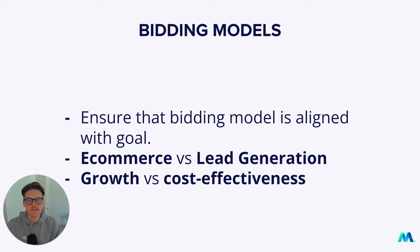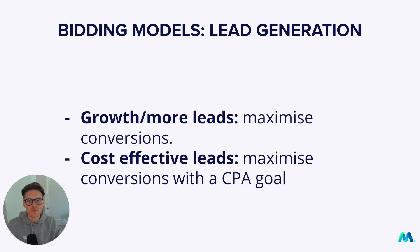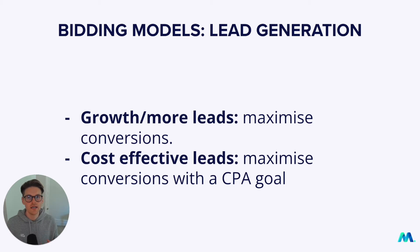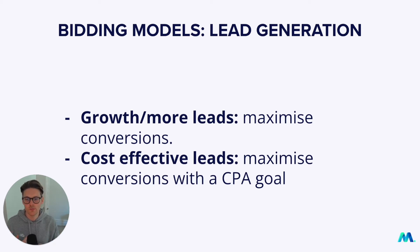So let's jump in to see what is the best model for you. For bidding models for lead generation — if you're focused on growth or you want more leads, you need to use a Maximized Conversions bidding model. It's simple. Once you've got about 30 to 50 conversions per campaign in the last 30 days, this is an amazing bidding model to use. So if you want more growth and more leads, Maximized Conversions is your goal.